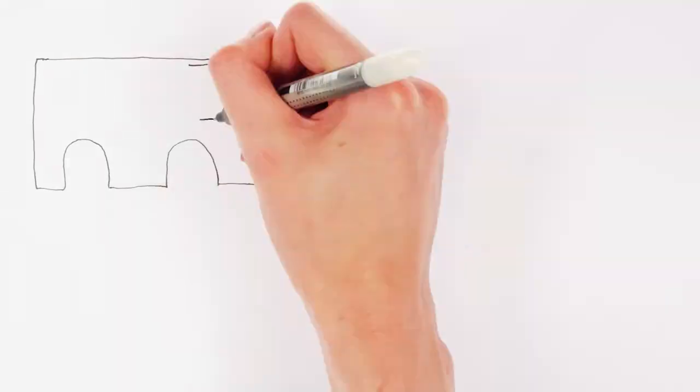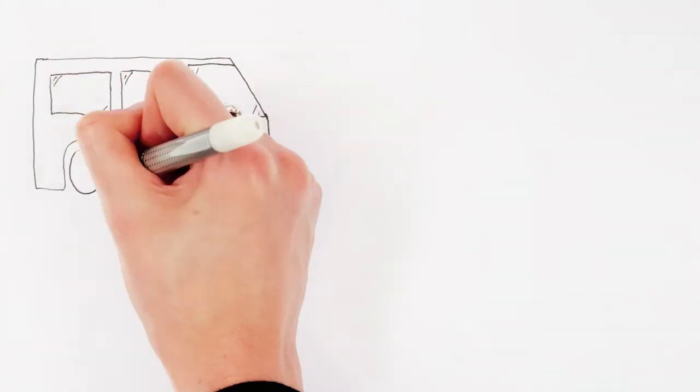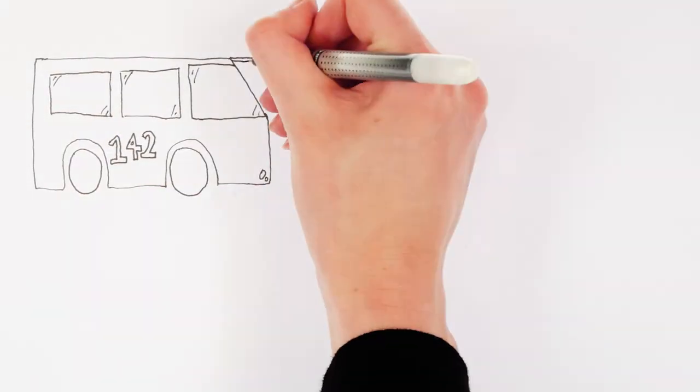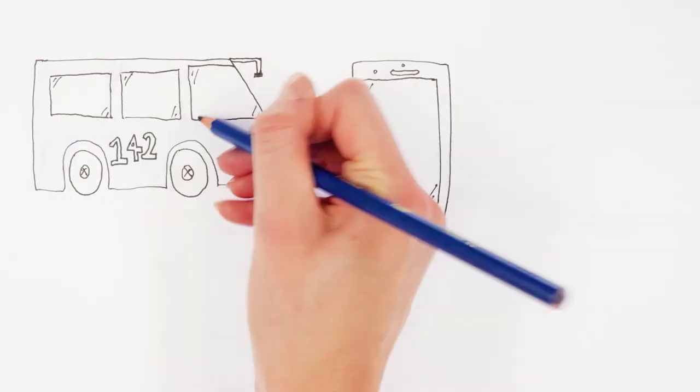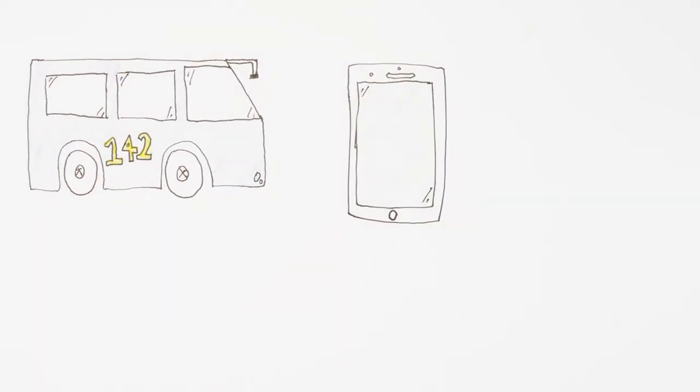This is why we can change our focus from seeing bus numbers at distance to numbers on our smartphone in less than a second. This happens so quickly that most of the time the hard work our eyes put in goes unnoticed.